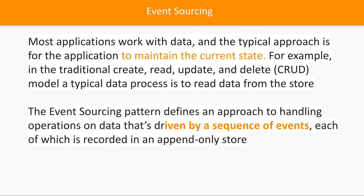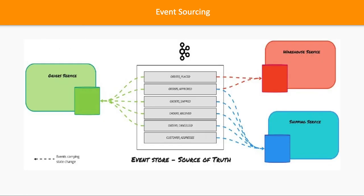In the next video we'll talk about the Command Query Responsibility Segregation (CQRS) pattern, which is actually an extension of event sourcing. Here we get these events, create a sequence, put them in a store, and they get processed. But what if we segregate the read and write sequences? There will be some read events and some write events — write events are commands, read events are queries. Let's have a look at the CQRS pattern in the next video.